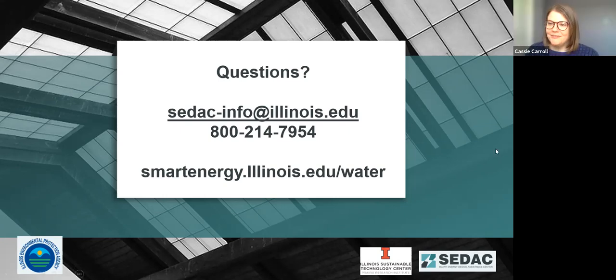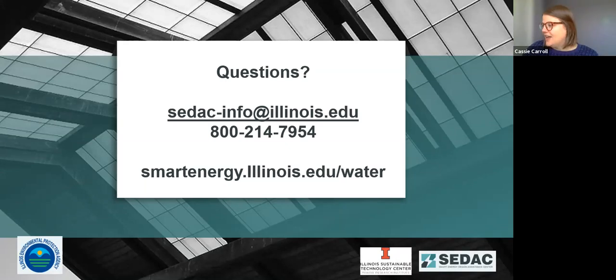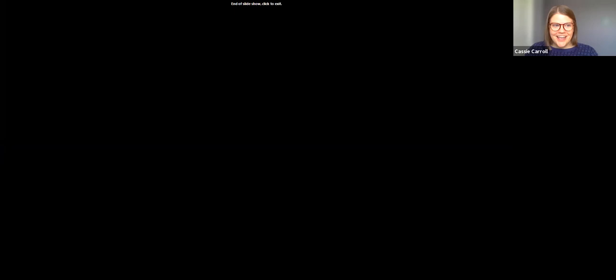Thank you Ryan and Hannah for an awesome presentation. We have a couple of questions. The first: what would indicate that my diffusers are fouling? As diffusers foul, that's going to increase the system pressures. So one method is to watch system pressures and system flow — if you see pressures rising versus your flow, that will indicate fouling and may also provide some indication of when it's time to clean.